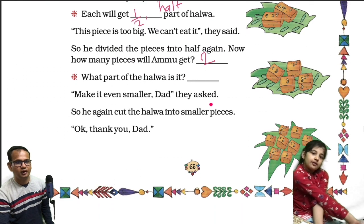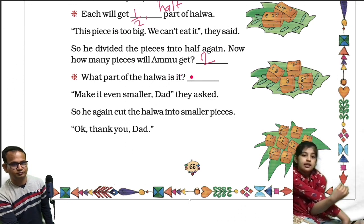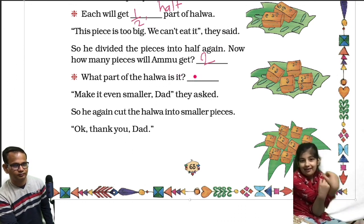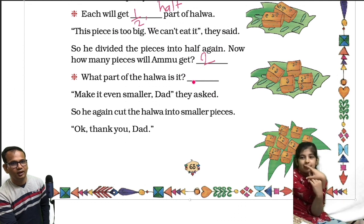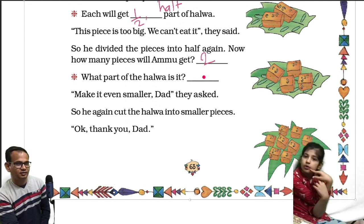What part of the halwa is it? It is one by four part of the halwa. One by four. He divided the pieces into half again, so each piece is one by four.